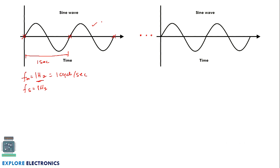Suppose if my signal again has FM equal to 1 Hz, and I am going to take twice that as a sampling frequency — that is 2 Hz. At 2 Hz, the sampling points will lie here, taking twice the frequency of the baseband signal.